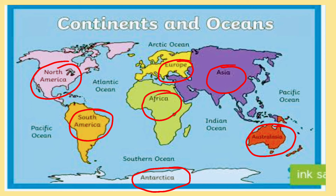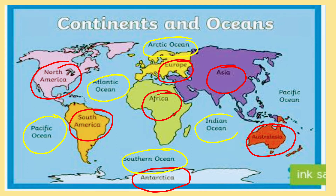Now you can see the oceans here. There are 5 oceans in the world. This is the Pacific Ocean, Atlantic Ocean, Arctic Ocean, Southern Ocean, and Indian Ocean. Yes, these are the 5 oceans in the world.